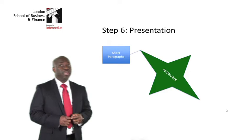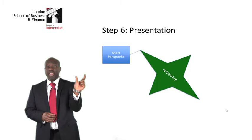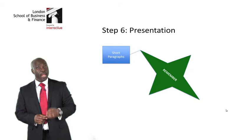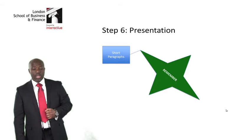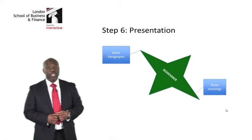Give a subheading for each paragraph, write up to a maximum of five to six lines, and stop. Then leave a line between the first and second paragraph. Bring down a short subheading and write another short paragraph. This will make it easy for the marker to identify your points.